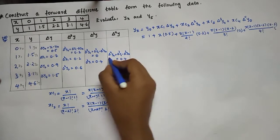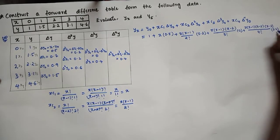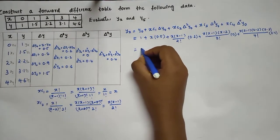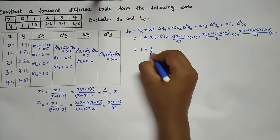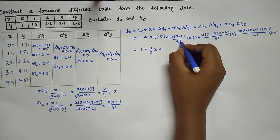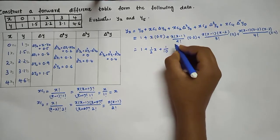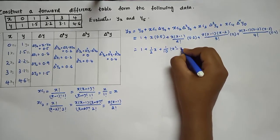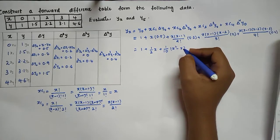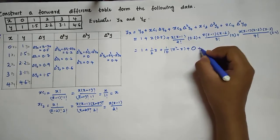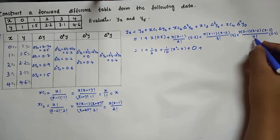For xC4 = x(x−1)(x−2)(x−3)/4!, with Δ⁴y₀ = 0.4, the last term is x(x−1)(x−2)(x−3)/24 · 0.4 = x(x−1)(x−2)(x−3)/60. Combining, the expression becomes: 1 + x·0.5 + x(x−1)/2·0.2 + 0 + x(x−1)(x−2)(x−3)/60·0.4.